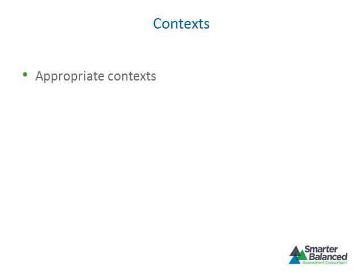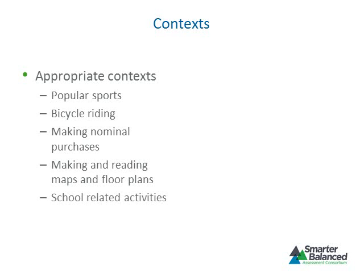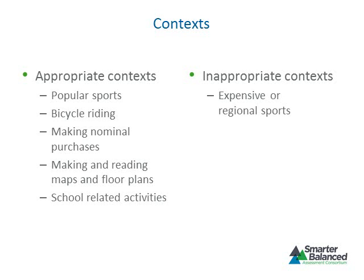Contexts of items must be appropriate for the age and experiences of middle school students. Some examples of inappropriate contexts for grades 6 through 8 include skiing, which is an expensive sport and has geographic bias, and swimming pools in backyards, due to socioeconomic biases. Saving to buy a new home or car, or comparing costs for college, would be appropriate contexts for older students but not appropriate for younger students.